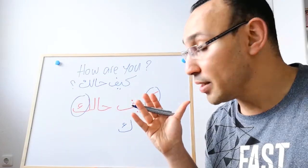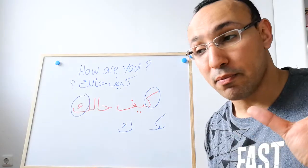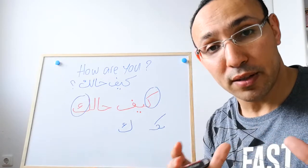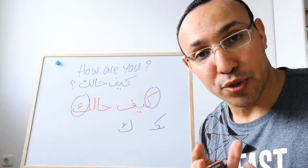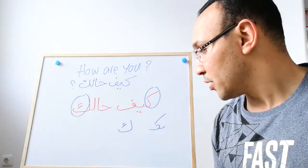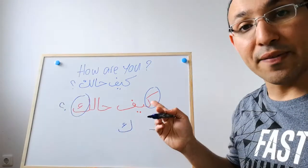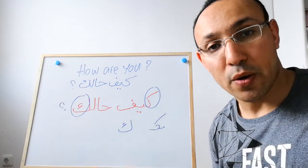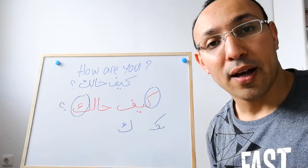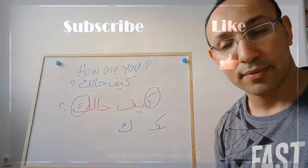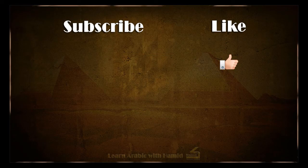This is very normal in the Arabic alphabet. Many letters have different forms depending on their position within the word. So this is 'kaifa haluka' - how are you, how are you doing? Kaifa haluka.